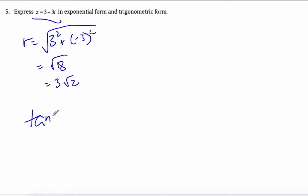Getting the angle, tangent θ is negative 3 over positive 3, which is negative 1. So θ, my reference angle is π/4. But if I think about my quadrant, I go 3, negative 3 is down here, so it's negative π/4.